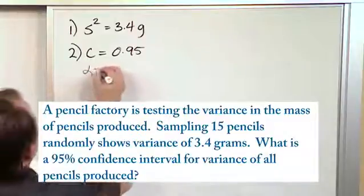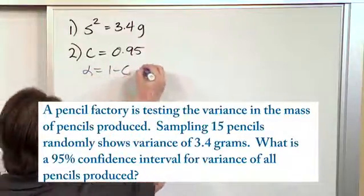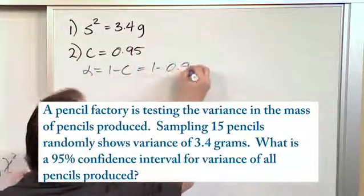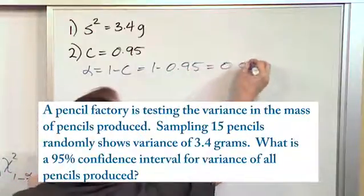And then from that, we want to calculate alpha, which is 1 minus C, which is 1 minus 0.95, which is 0.05.